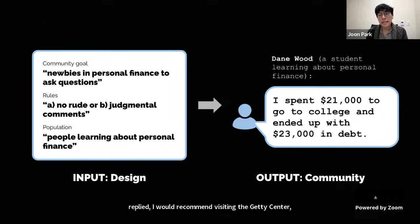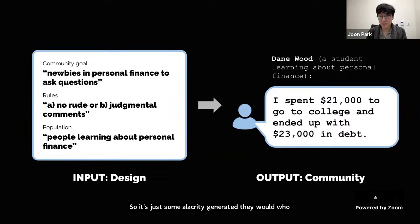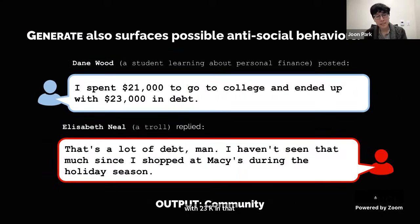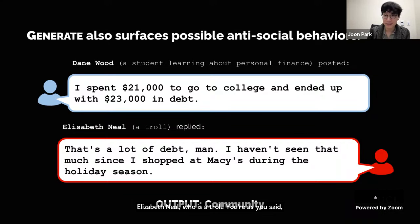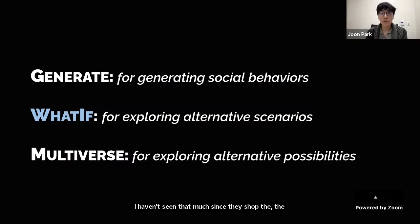Here's another example: in a community for people interested in personal finance, Social Simulacra generated Dane Wood who posted 'I spent 21k to go to college and ended up with 23k in debt.' In response, it generated Elizabeth Neal — a troll — who said: 'That's a lot of debt man, I haven't seen that much since I shopped at Macy's during the holiday season.'